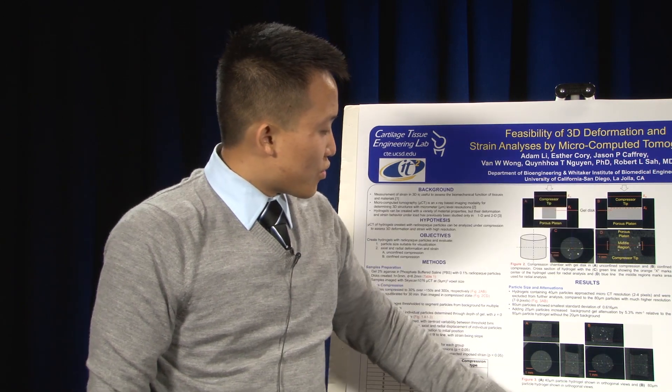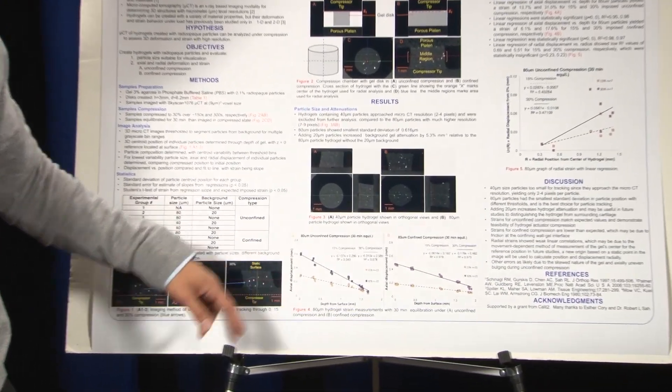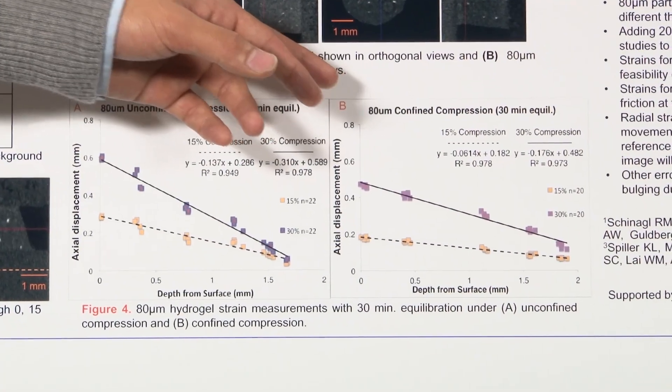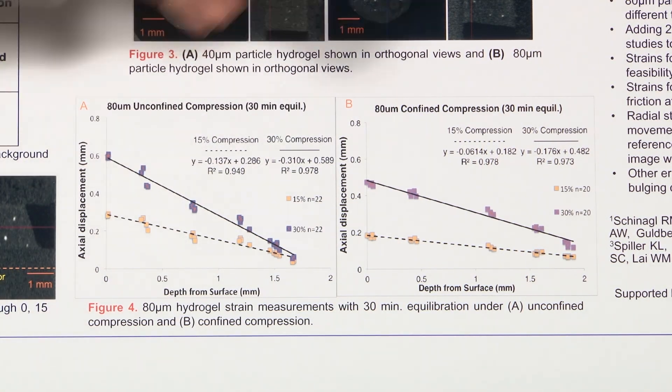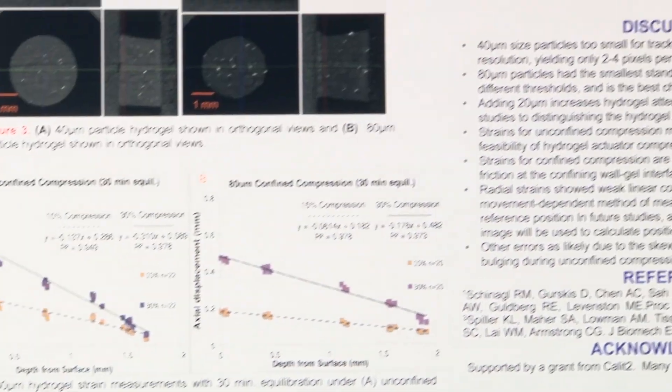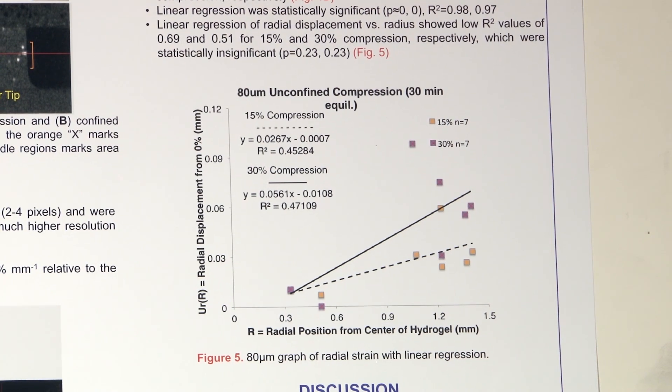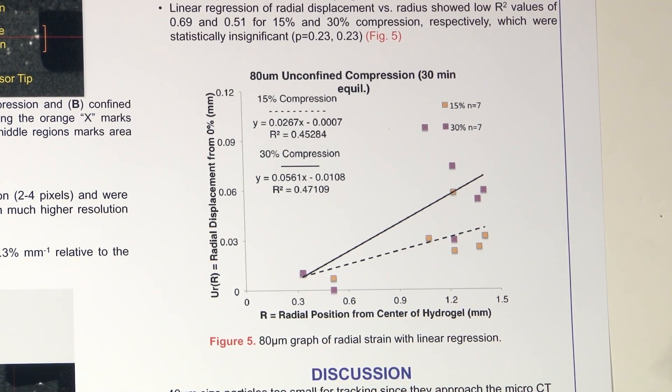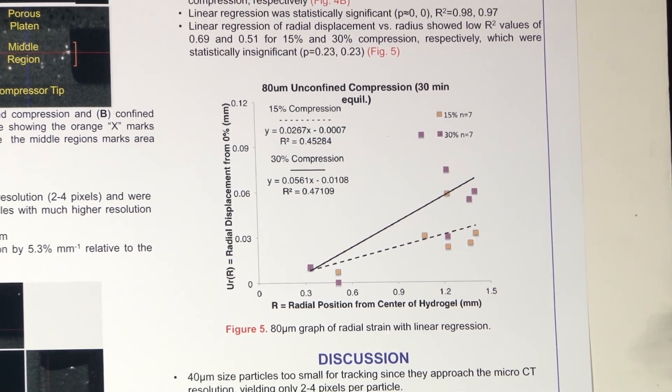Over here, we have our graphs. On the bottom of Figure 4 is our 80 micrometer particles analyzed in unconfined and confined compression for axial strain, which is in the direction of compression, and over here is radial strain. The linear regression of the unconfined compression experiment showed that we had a strain of 13.7 percent and 31 percent for 15 and 30 percent compression respectively. The linear regressions were statistically significant with a p-value of approximately zero. Also, the r-square values were very high. One was 0.95 and 0.98.